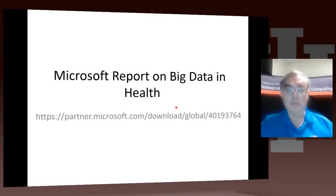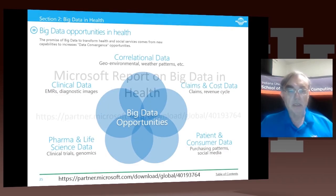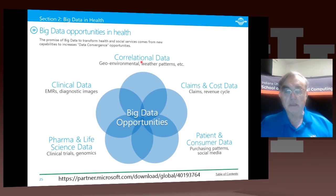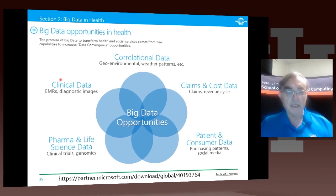We take a couple of slides from a Microsoft report on big data in health, with a relatively similar message to some of the other material we have. This slide tells us the types of data we can correlate. We have the basic electronic medical records and the pathology images — there are huge amounts of data here — the clinical data, and all the data from pharmaceutical companies, bioinformatics, university research, and things like that.